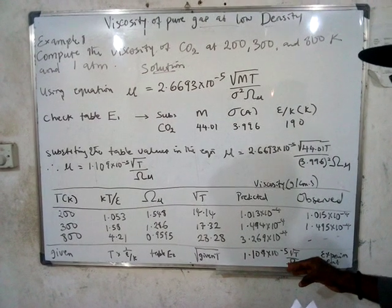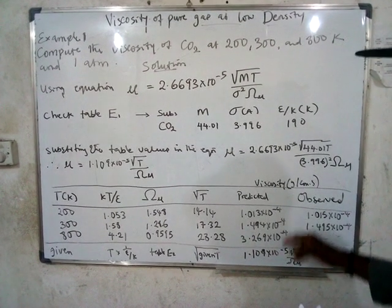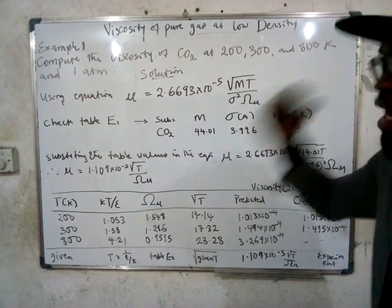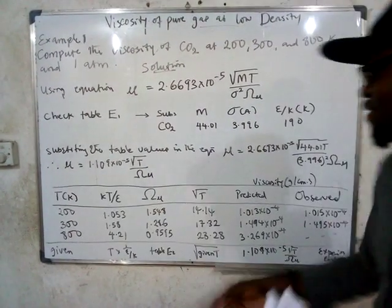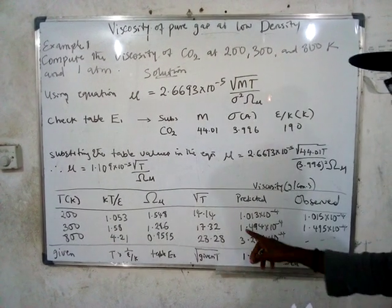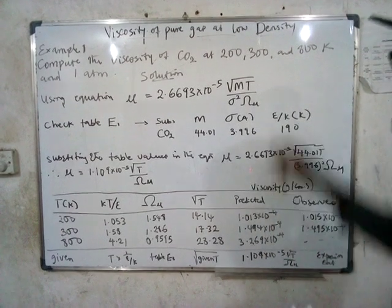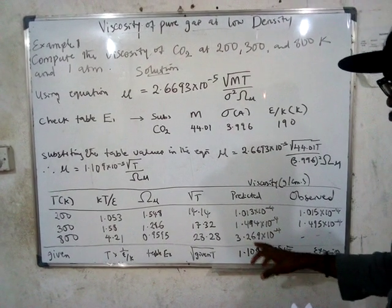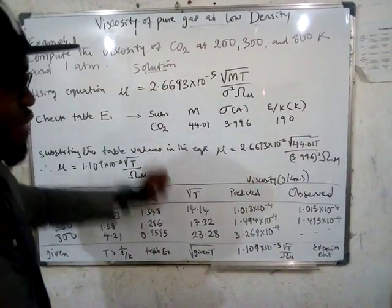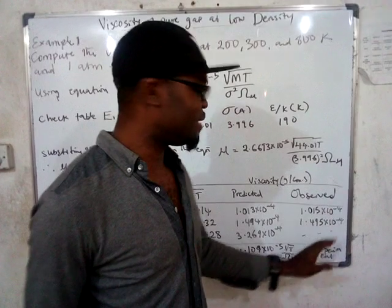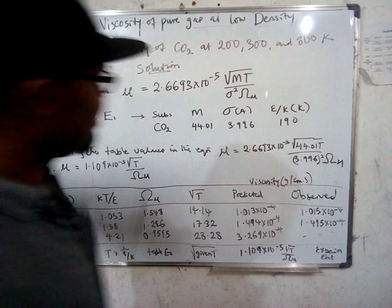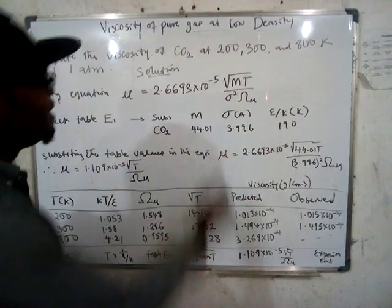Solving out, you get all the predicted viscosity values. The viscosity of CO2 at 200 K is 1.013 × 10⁻⁴, at 300 K it is 1.494 × 10⁻⁴, and at 800 K it is 3.269 × 10⁻⁴. To verify this prediction is correct, compare with experimentally observed values — you can see the predicted values are very close to the experimental ones, confirming the procedure.